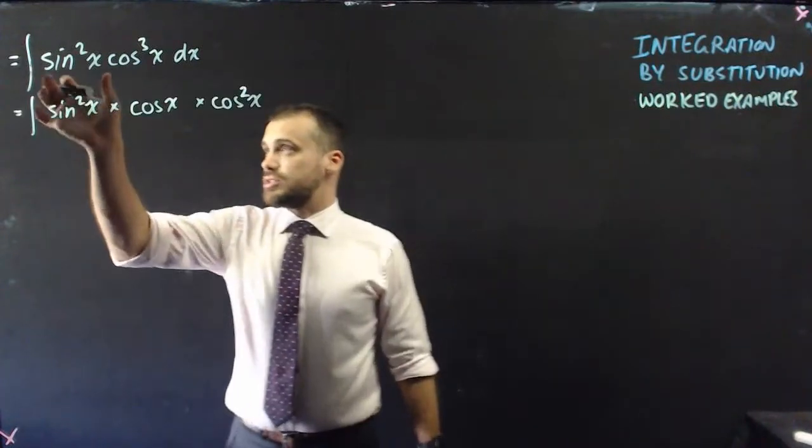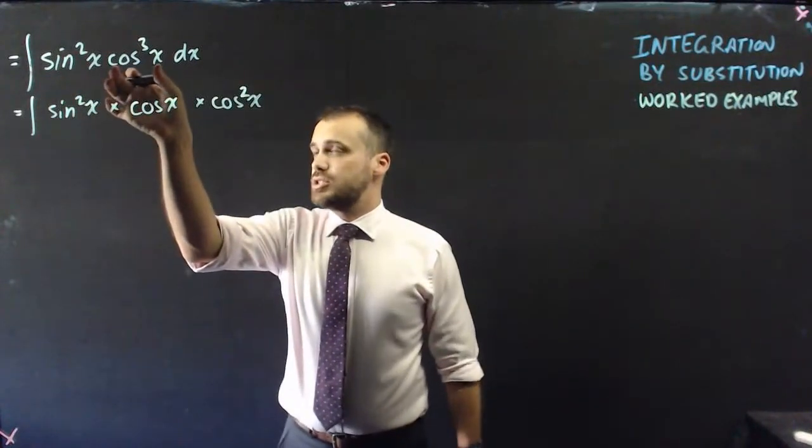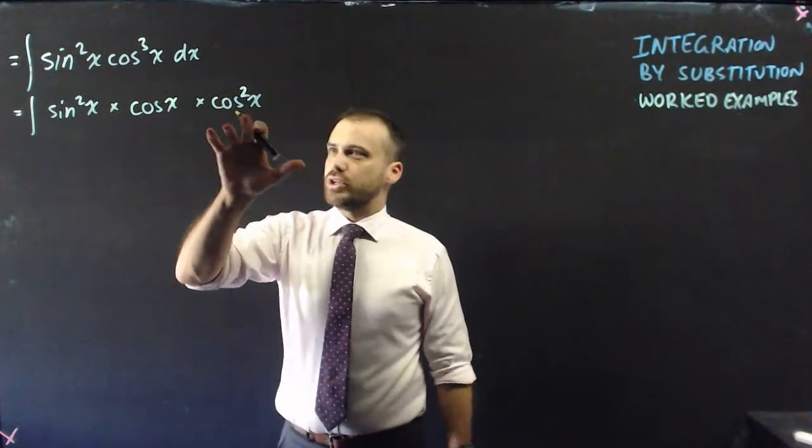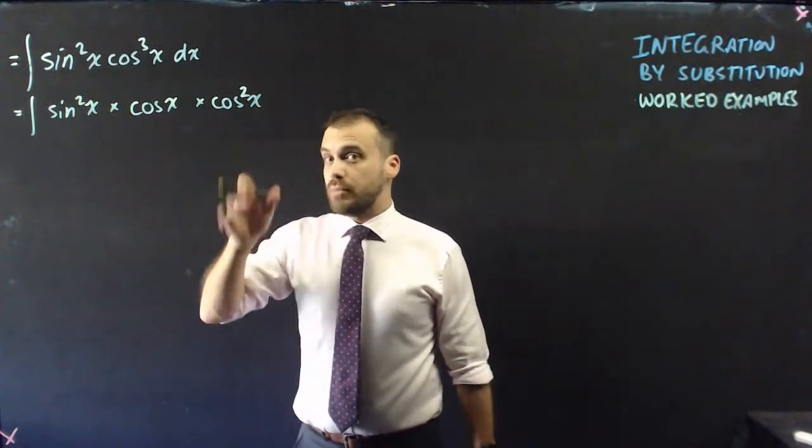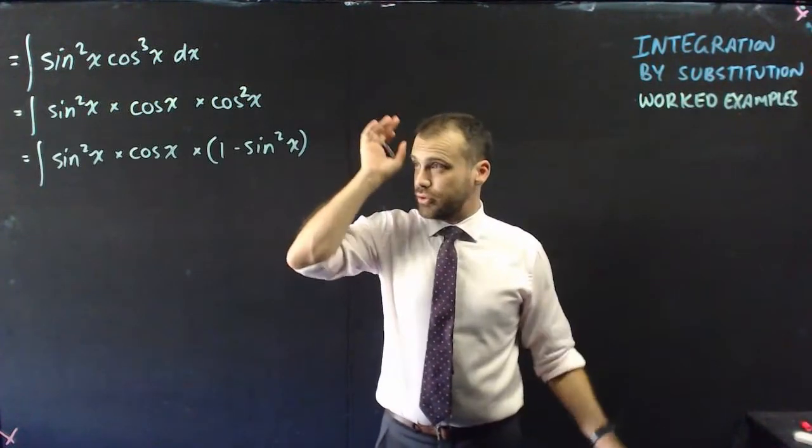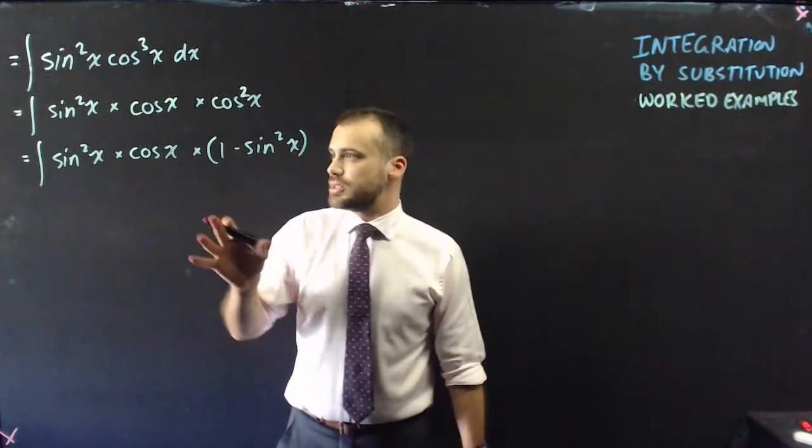So here it is, I've done it, sine squared x, and then the cos cubed x is broken into cos x and cos squared x. Why? Well, that allows me to rewrite cos squared x as 1 minus sine squared x. And you might be thinking, what on earth? Why are we doing this?